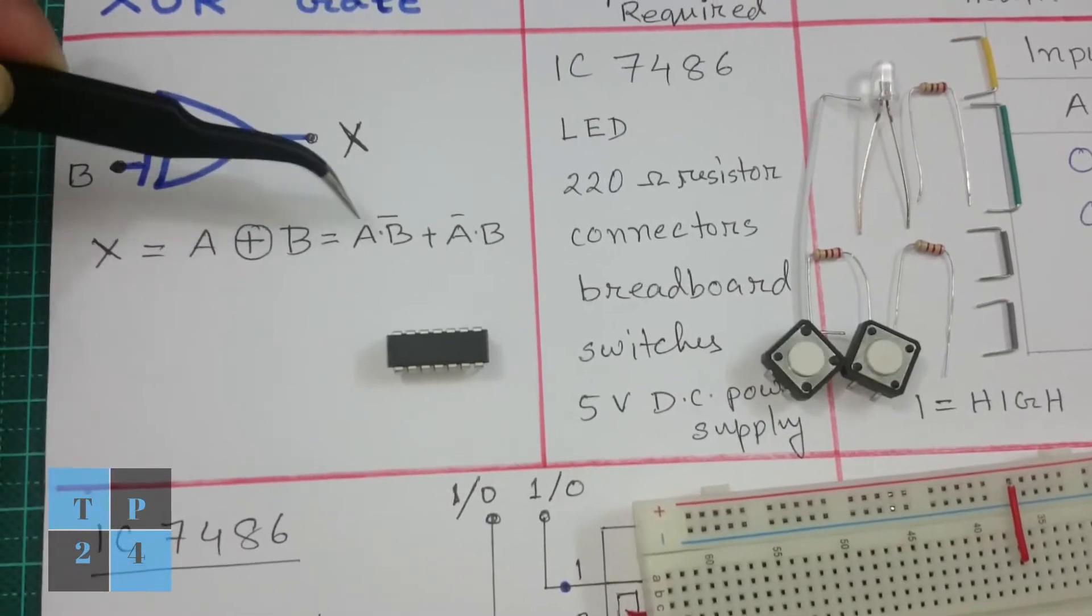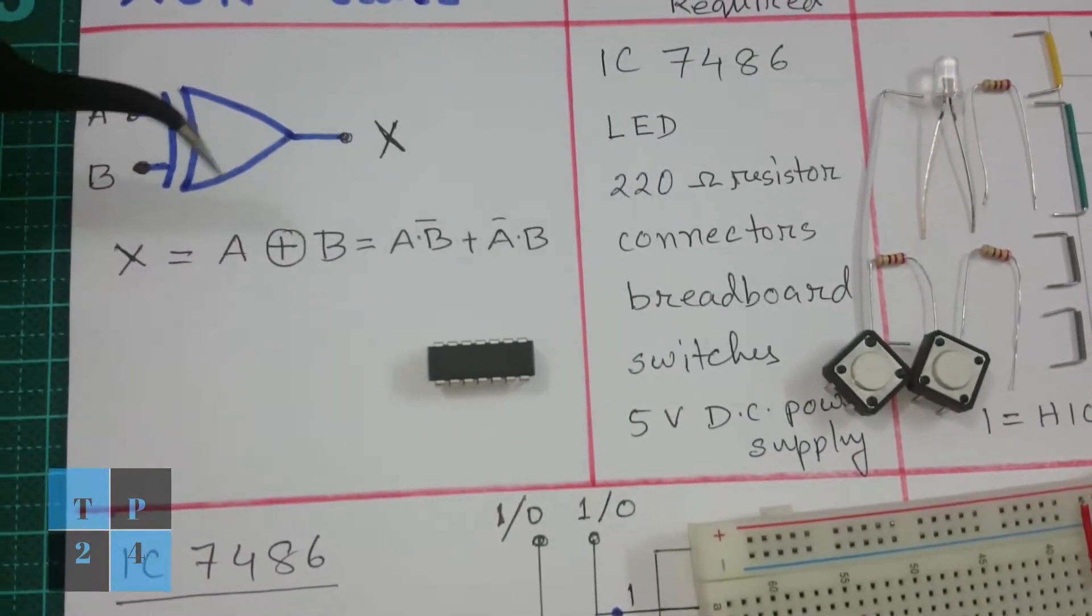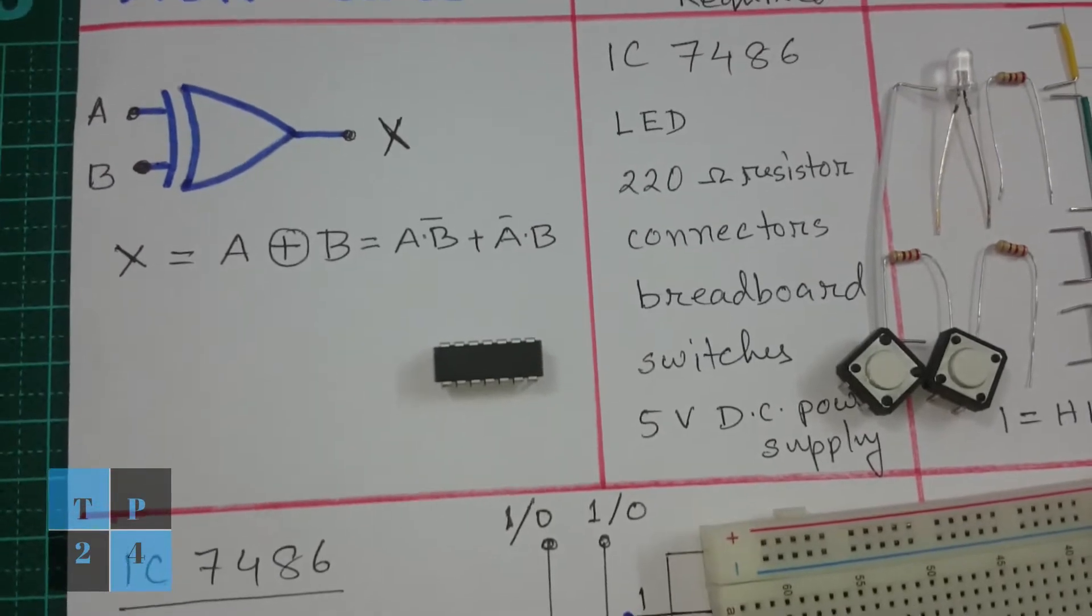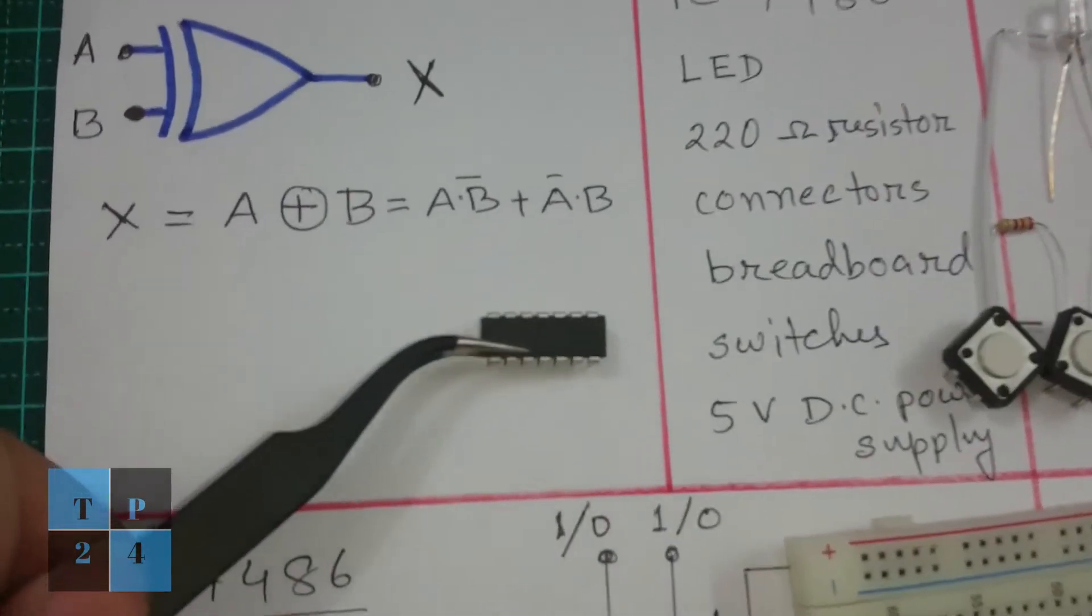And here is the Boolean expression of XOR output. This is the IC that I am going to implement.